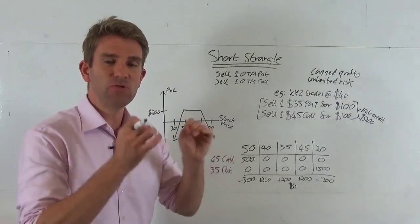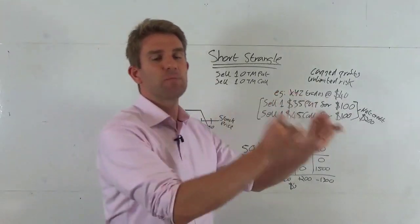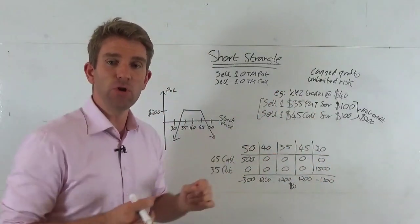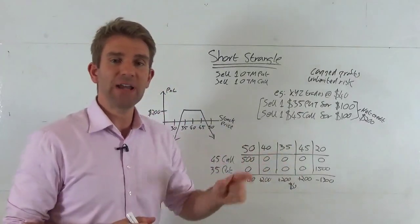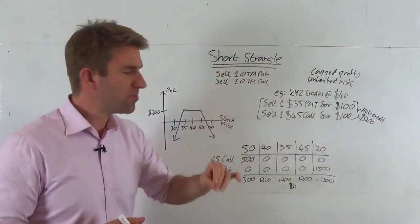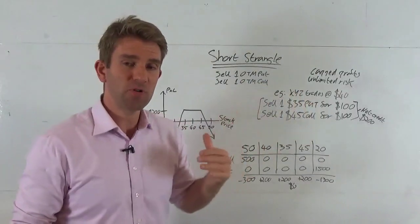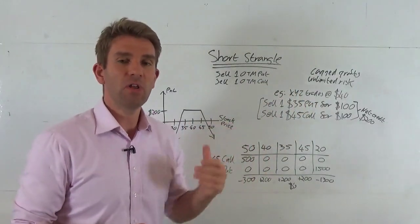The idea of the short strangle is that you think the stock is going to stay in a range that you specify at expiry. The ideal scenario is the stock stays within that range at expiry and the options you're selling expire worthless, and you take the full credit.